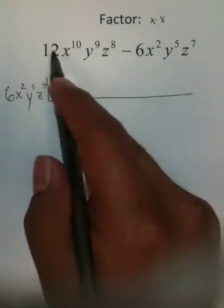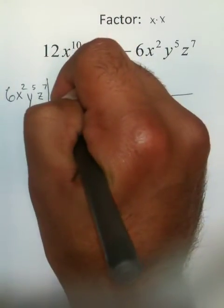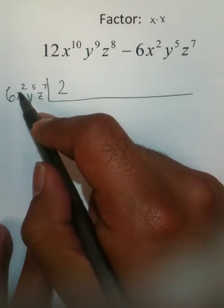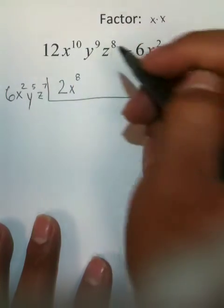Now, this is all division. 12 divided by 6 turns into the whole number 2. x to the 10th divided by x to the 2nd gives you an x to the 8th.